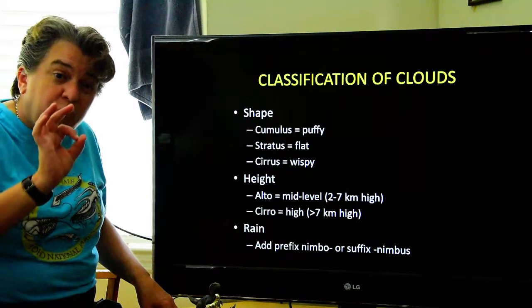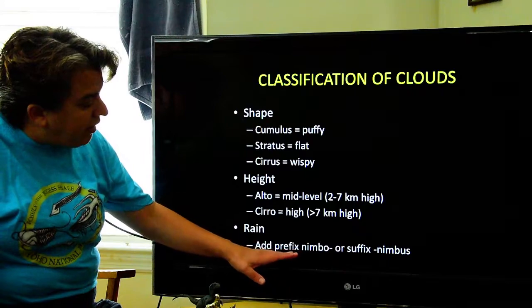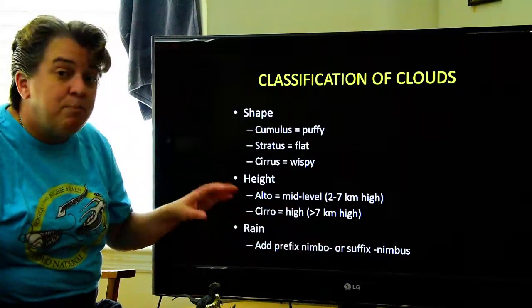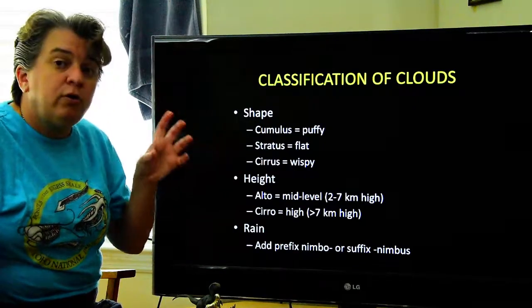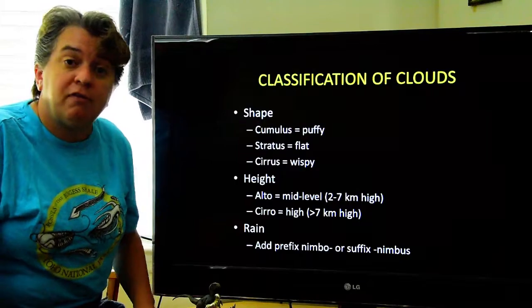And then the last thing is if they're rain producing. If they're rain producing, you add the prefix nimbo or the suffix nimbus. Like cumulonimbus means a puffy cloud that produces rain.